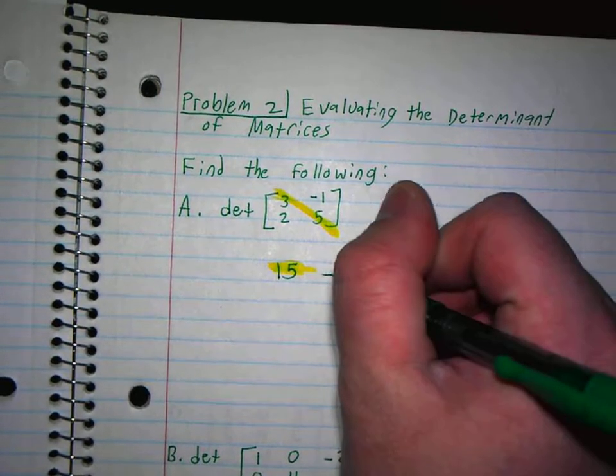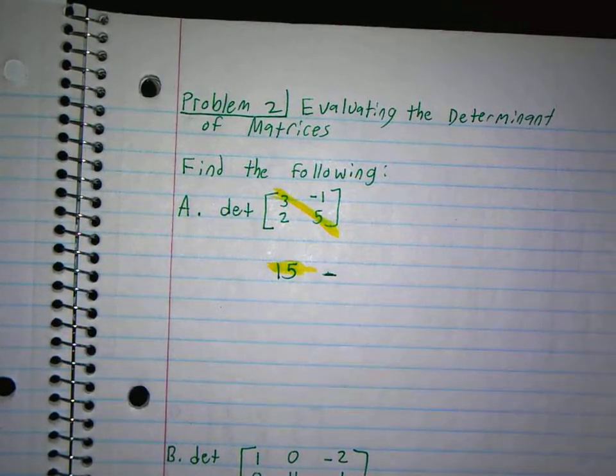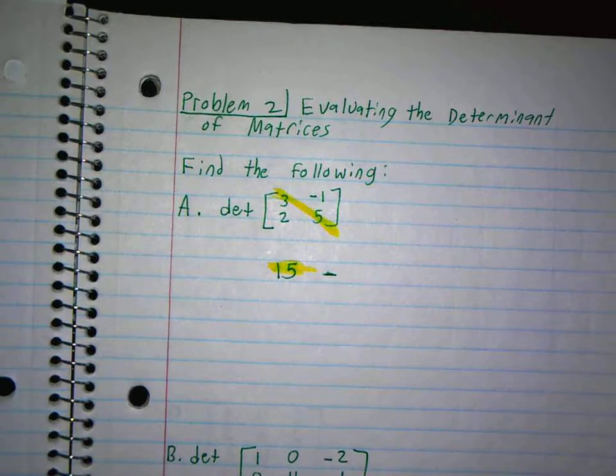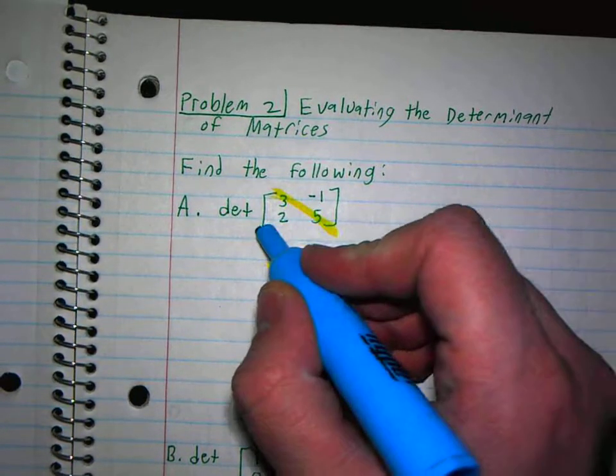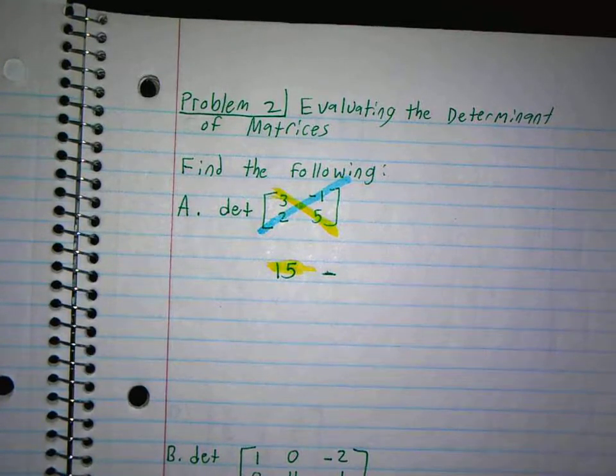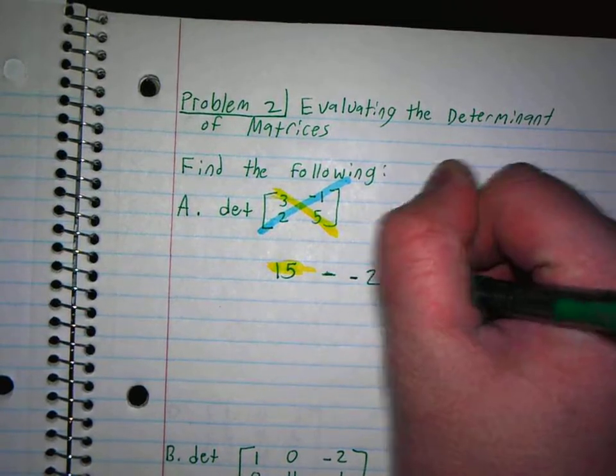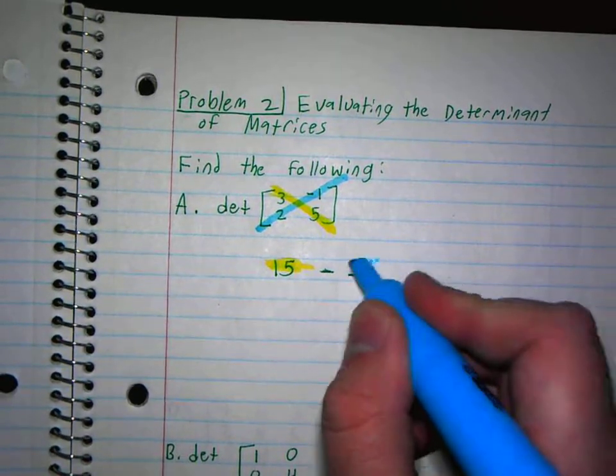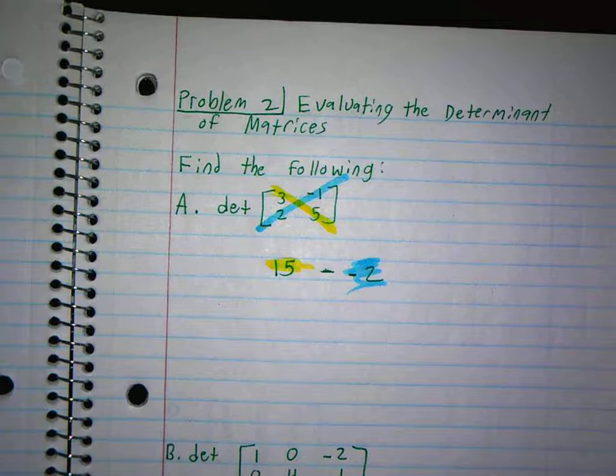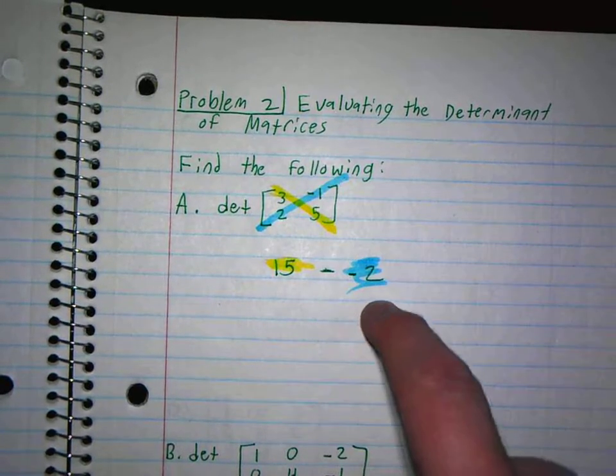And then minus, and kids forget that minus. I'm not sure why, but they always forget that minus. Minus this way. And 2 times negative 1 is negative 2.